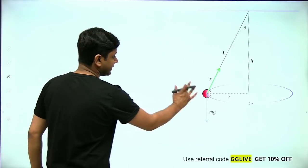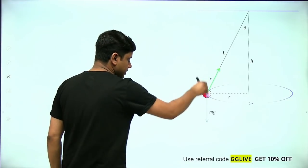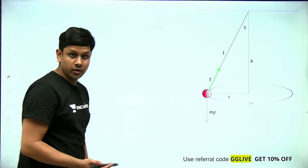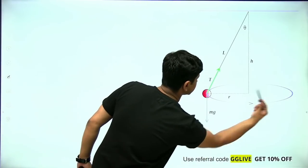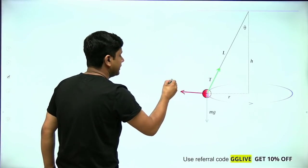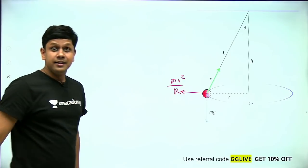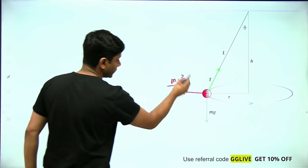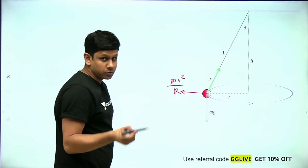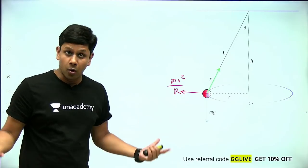There is a tension force due to the string, an mg force downward, and a centrifugal force directed outward from the horizontal circle. This centrifugal force is mv²/r outward. Don't make the mistake of pointing it in the wrong direction — that would be completely wrong.